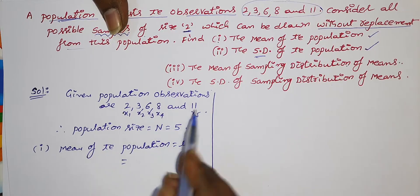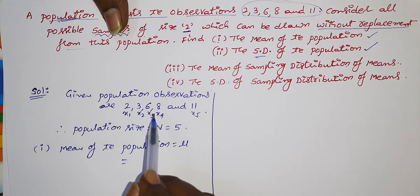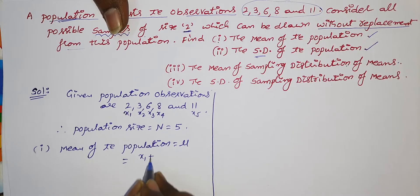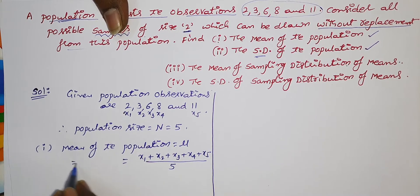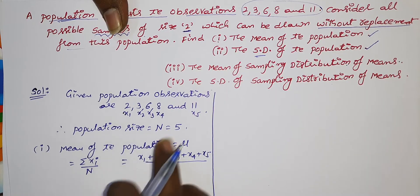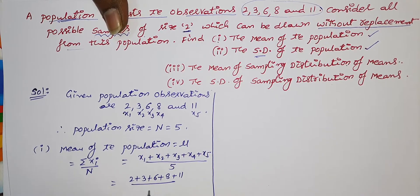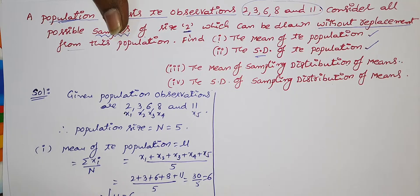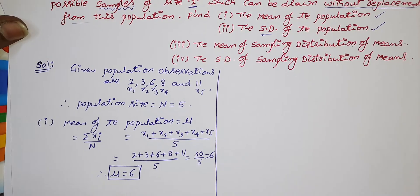The population mean is represented by mu. The mean is the sum of all observations divided by the total number of observations: (x1 + x2 + x3 + x4 + x5) / 5. So (2 + 3 + 6 + 8 + 11) / 5 = 30 / 5 = 6. The population mean mu is 6.